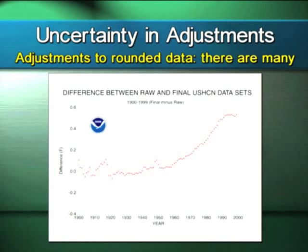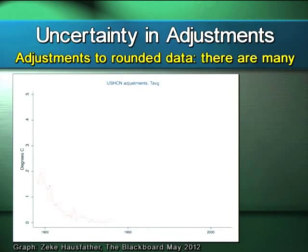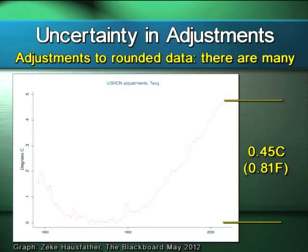A lot of folks say this is entirely justified and there have been scientific papers written on it. Zeke Hausfather has done a graph showing that the work done with BEST in checking these things was justified and that the adjustments were necessary and real. But the fact is, it adds about 45 hundredths of a degree centigrade, or 0.81 degrees Fahrenheit, to the entire surface temperature record for the United States, and most of that adjustment is in the last 50 years.